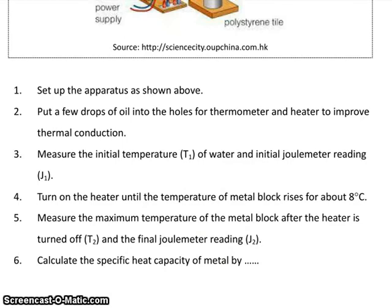And in this way we may find its specific heat capacity. The formula being energy divided by the mass of aluminum block and temperature change in the experiment.